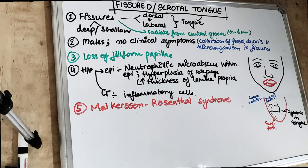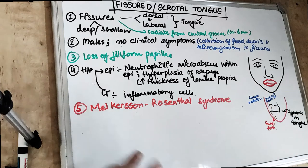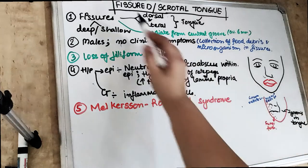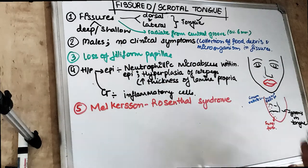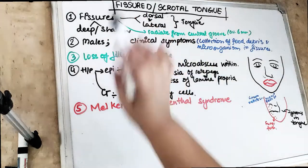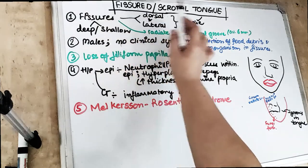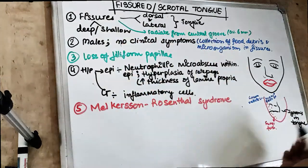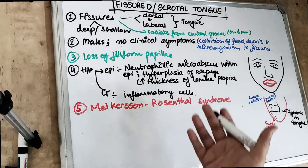So talking about the fissured or the scrotal tongue — as the name suggests, fissured tongue means there are going to be fissures present in the tongue.